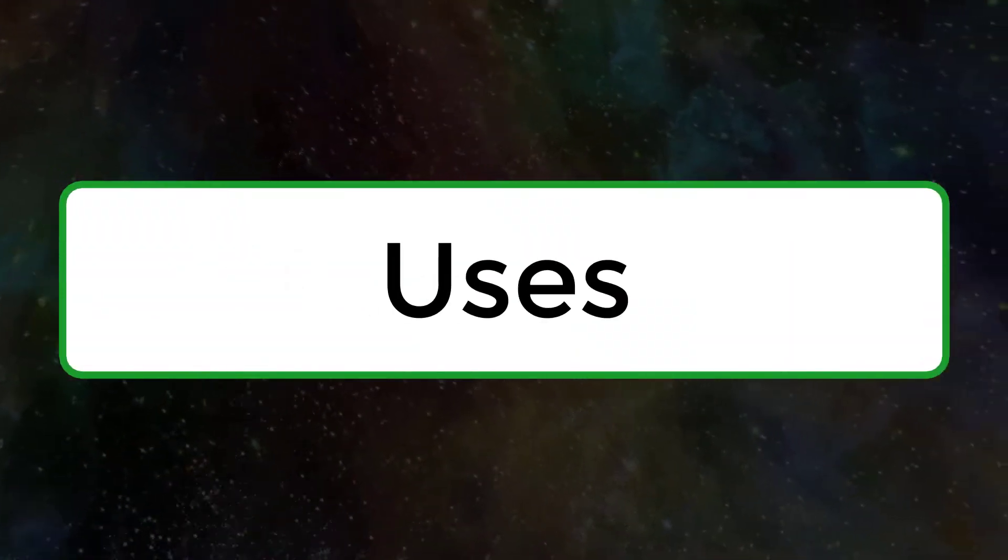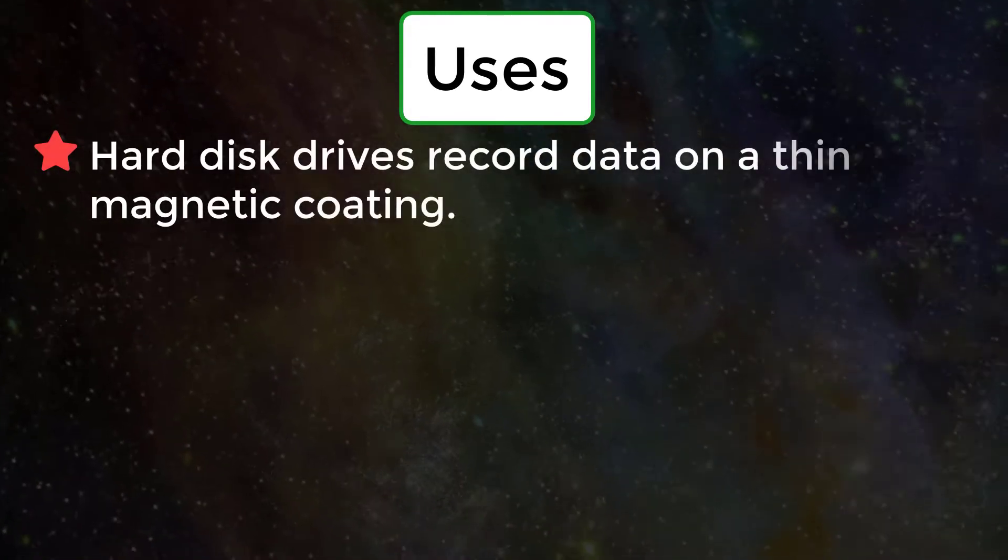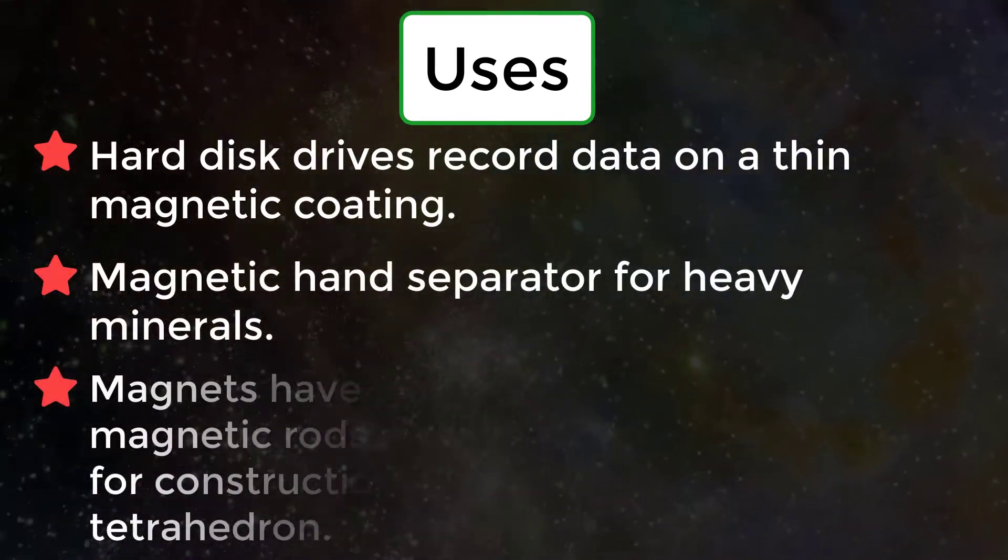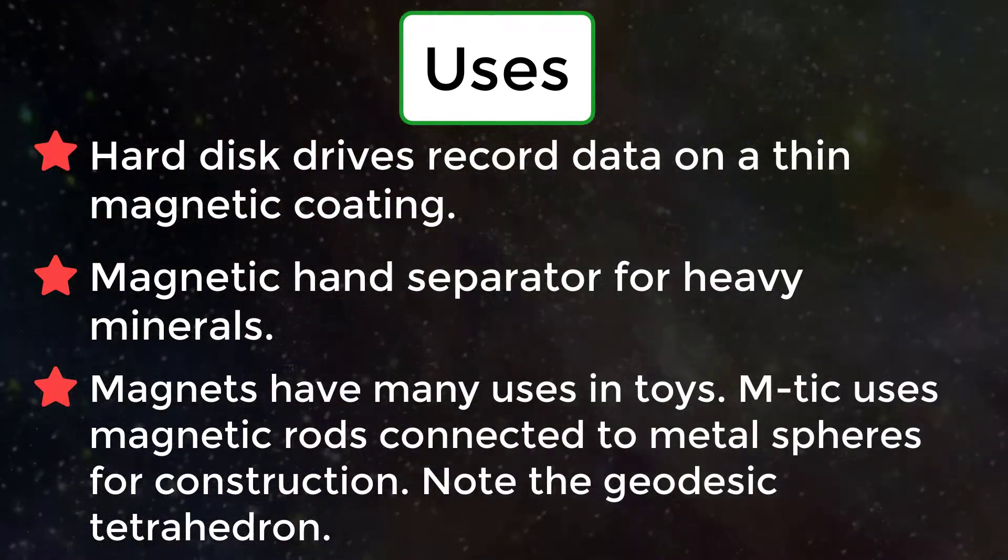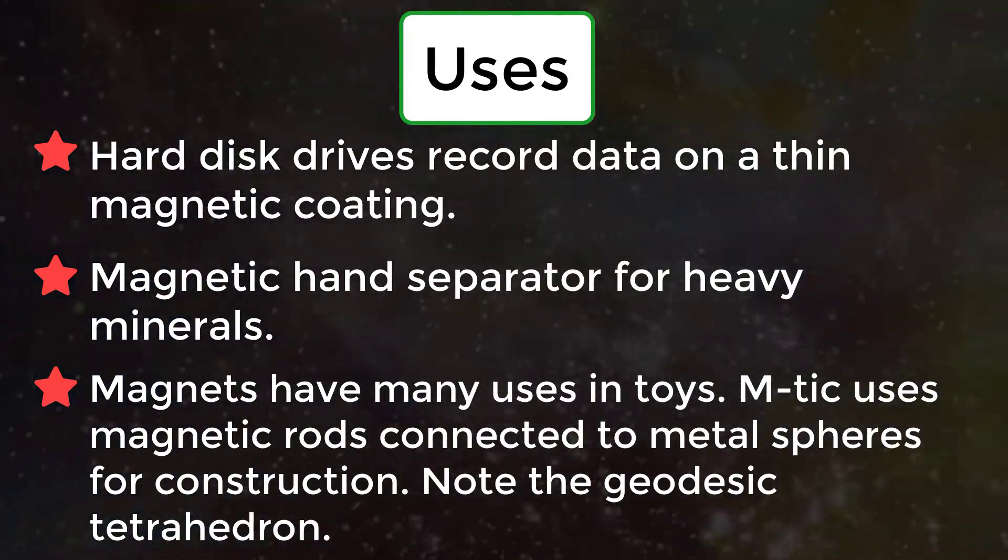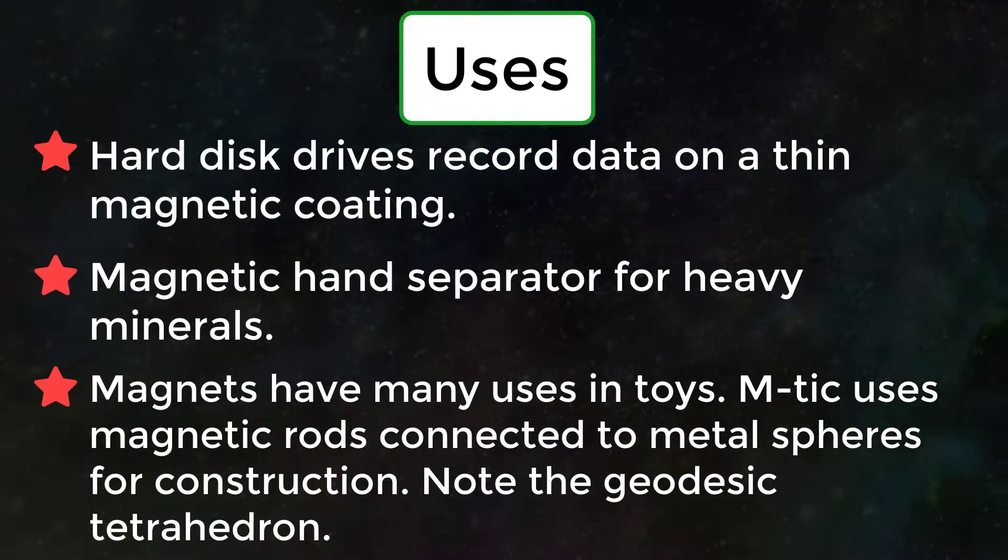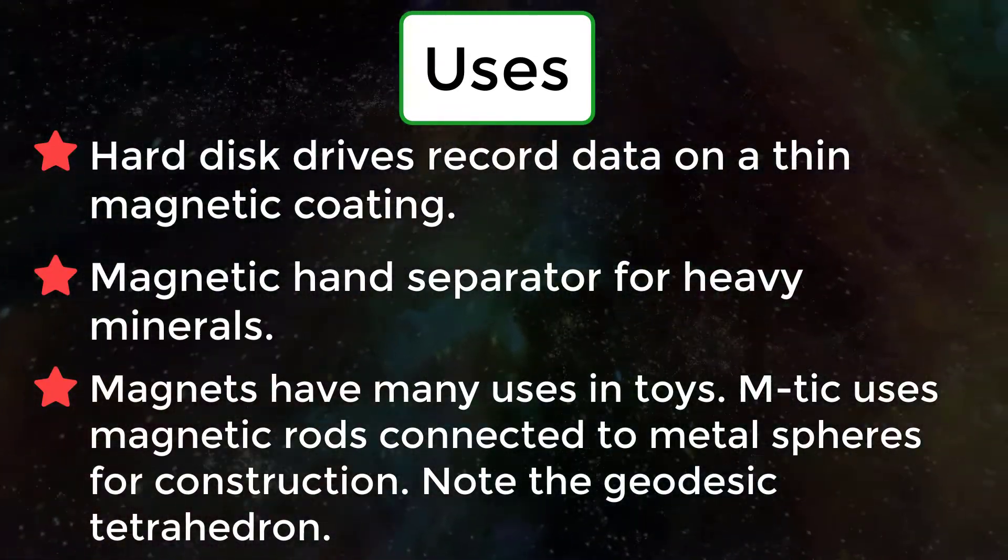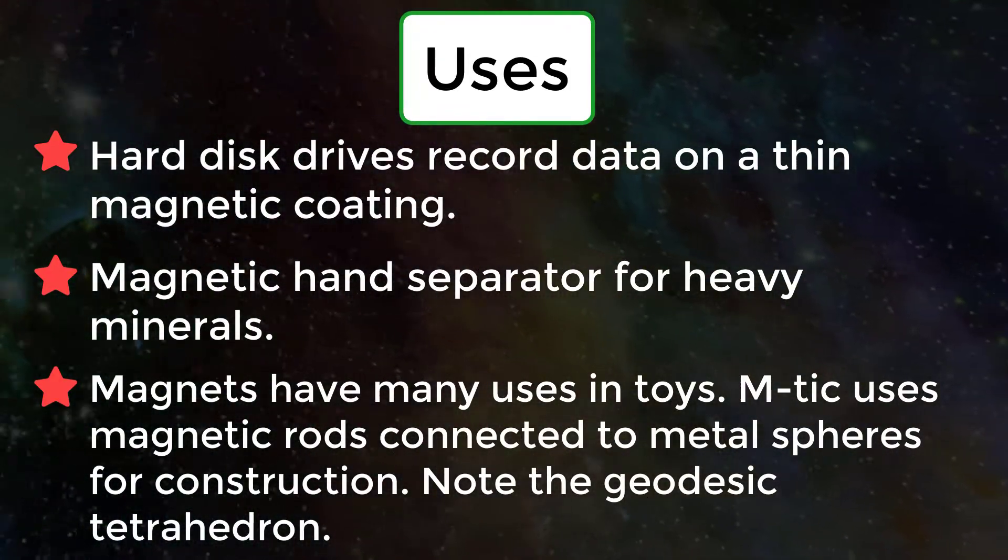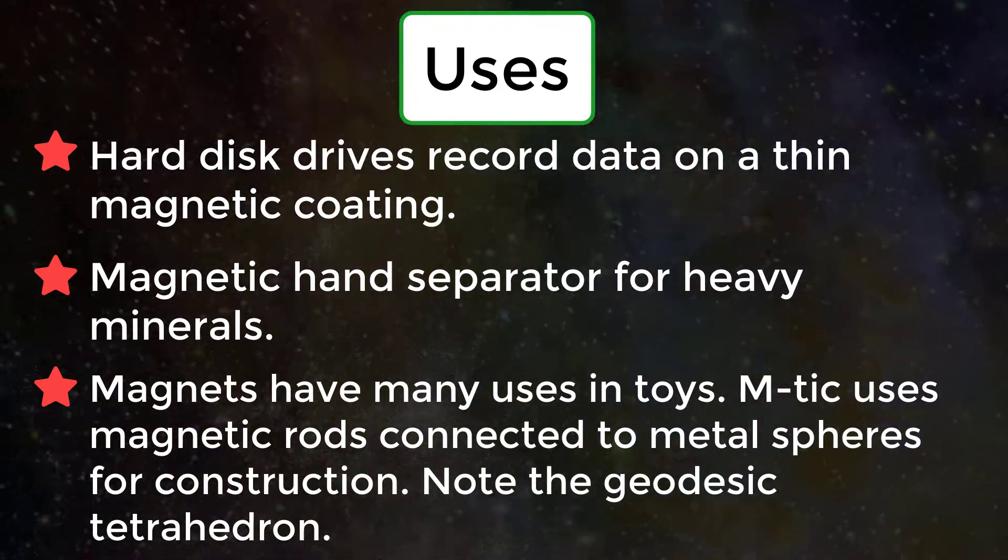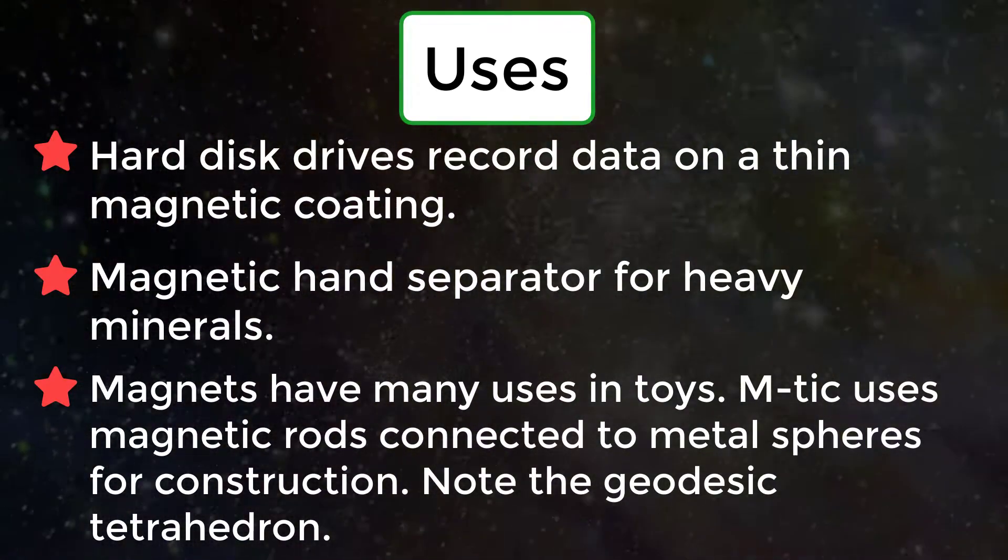Uses. Hard disk drives record data on a thin magnetic coating. Magnetic hand separator for heavy minerals. Magnets have many uses in toys. Emtek uses magnetic rods connected to metal spheres for construction. Note the geodesic tetrahedron.